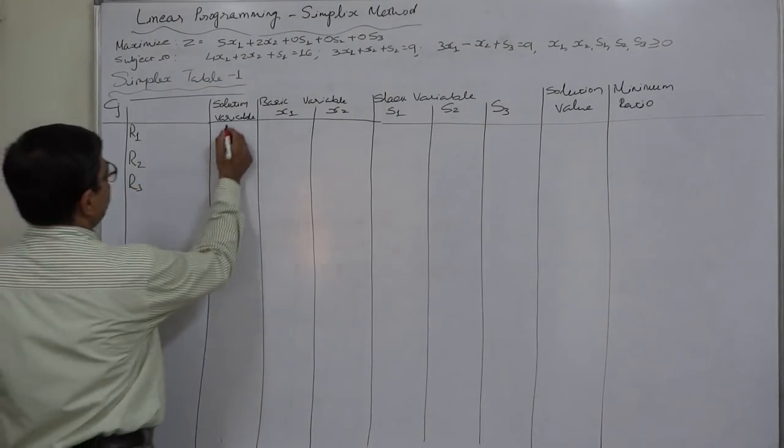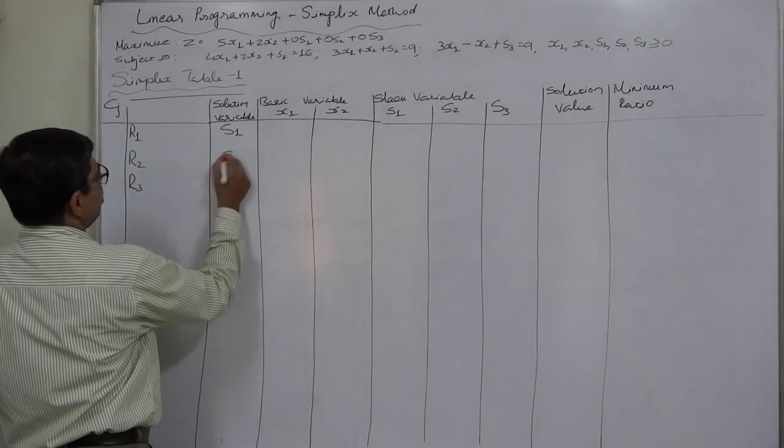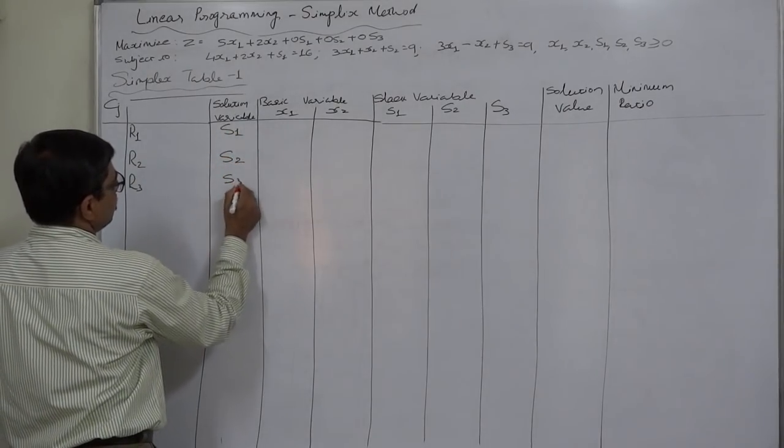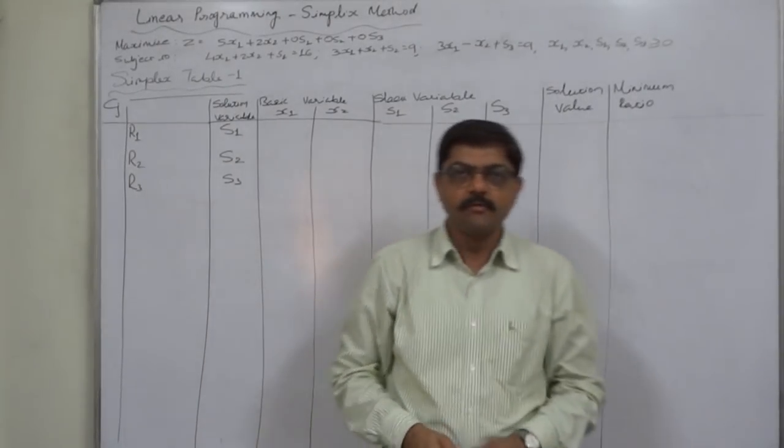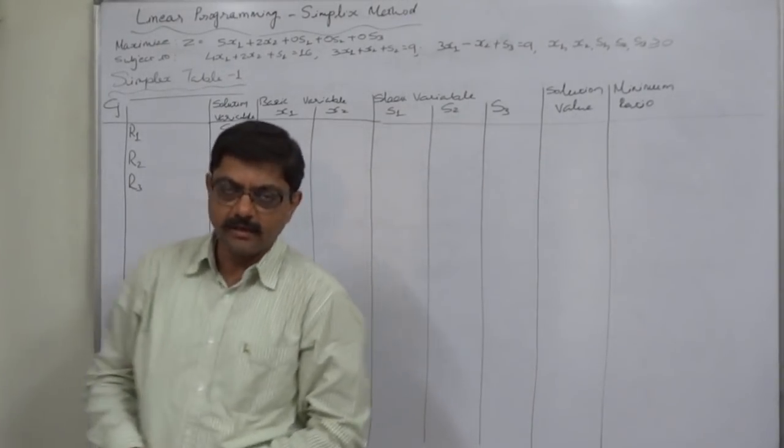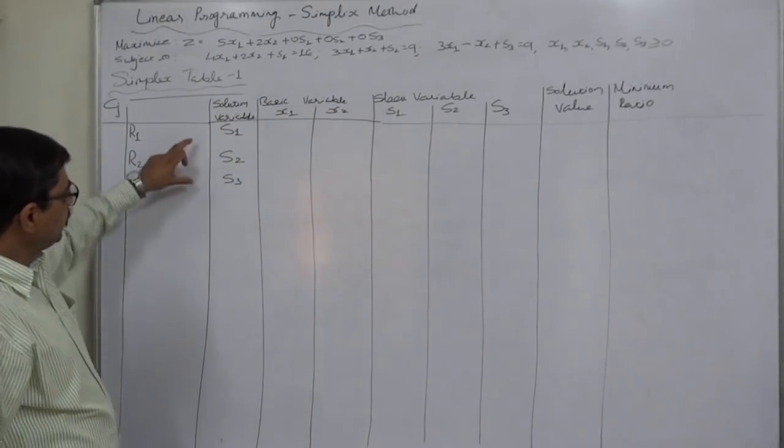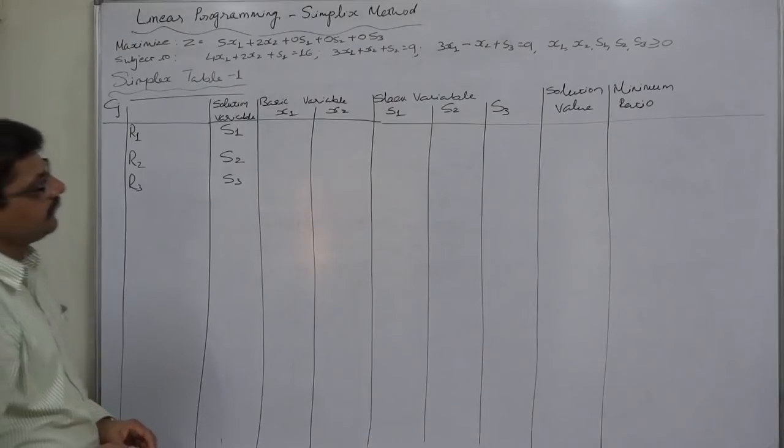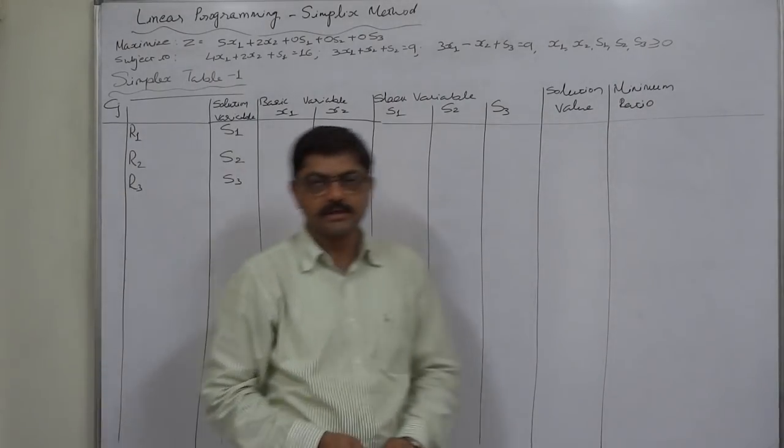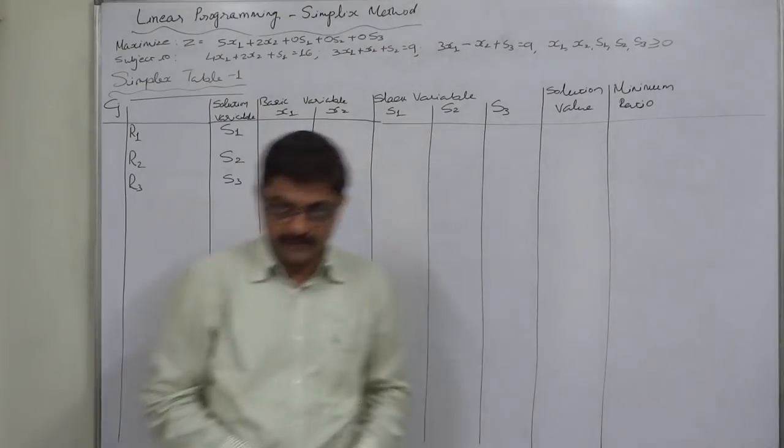As we know that in the first simplex table for a problem having less than or equal to signs in all the inequalities we will have the slack variables as solution variable because the basic variables X1 and X2 take value 0 in the first simplex table.